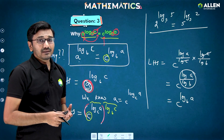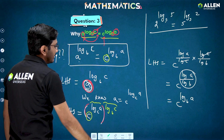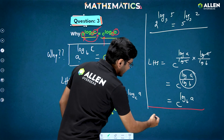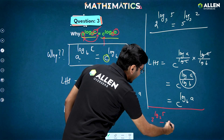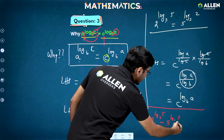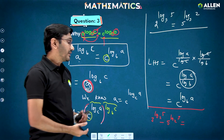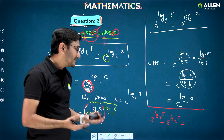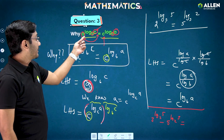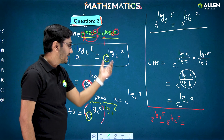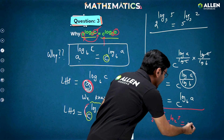So this property is very important to solve many questions. For example, if you have been asked: what is 3 raised to log of 5 to the base 2, minus 5 raised to log of 3 to the base 2? The answer is 0, because even though these two look different, they are actually equal — that is what we just studied: a to the power log of c to the base b equals c to the power log of a to the base b. So these two are equal and their difference is 0.